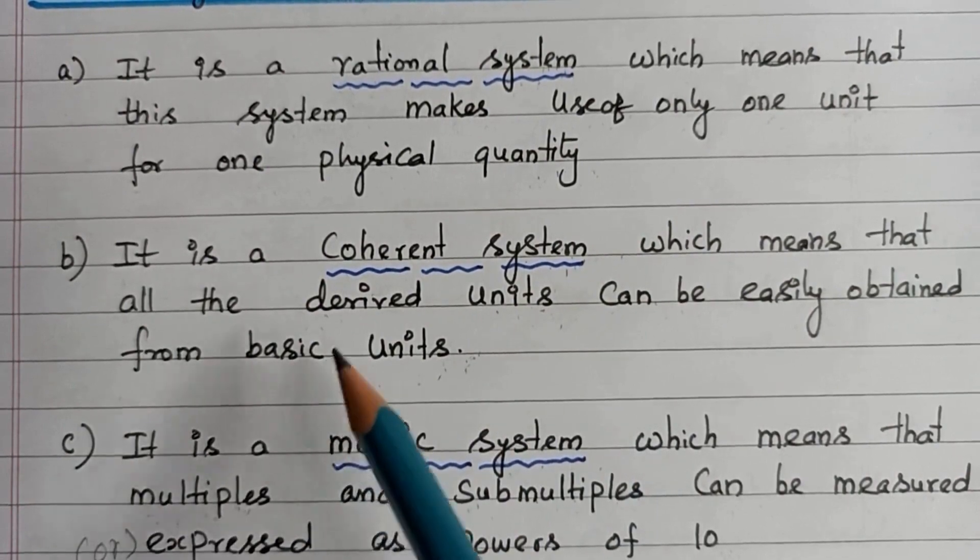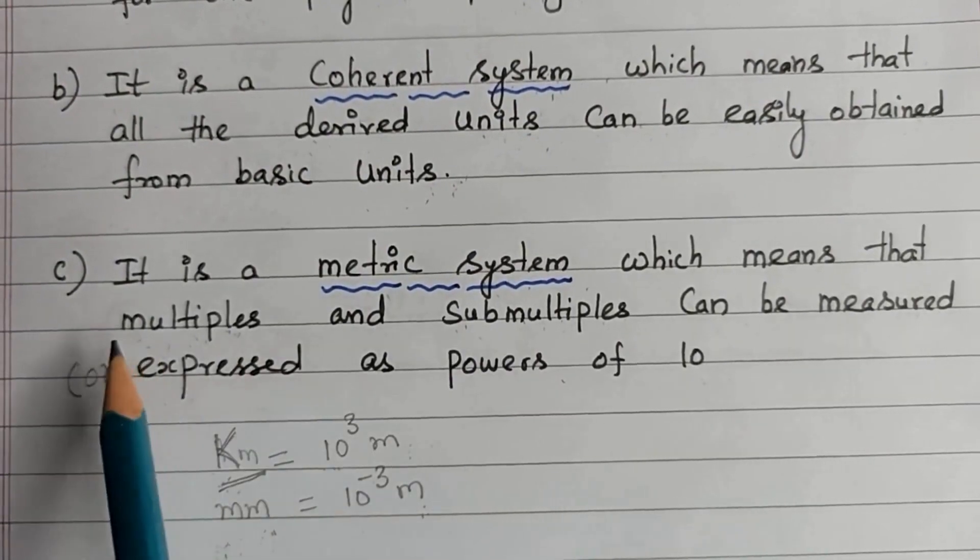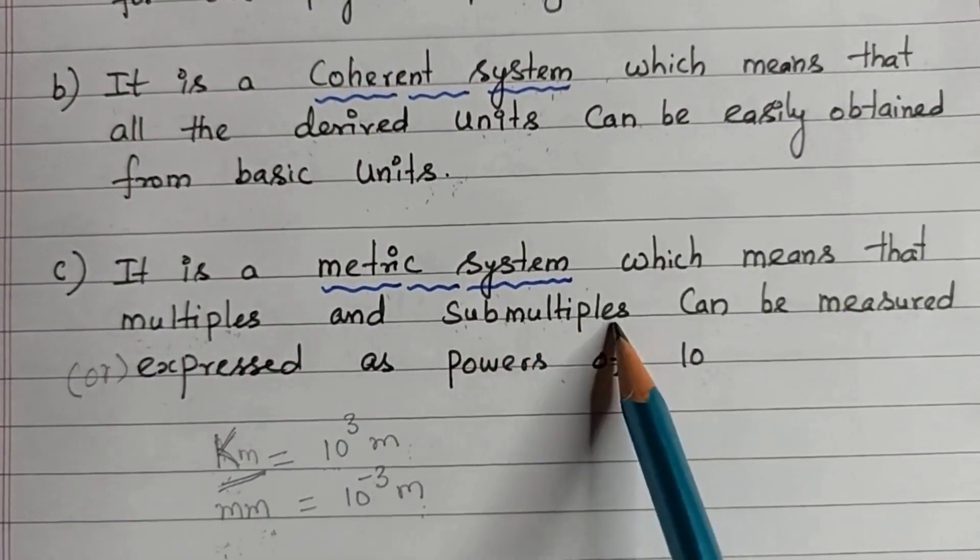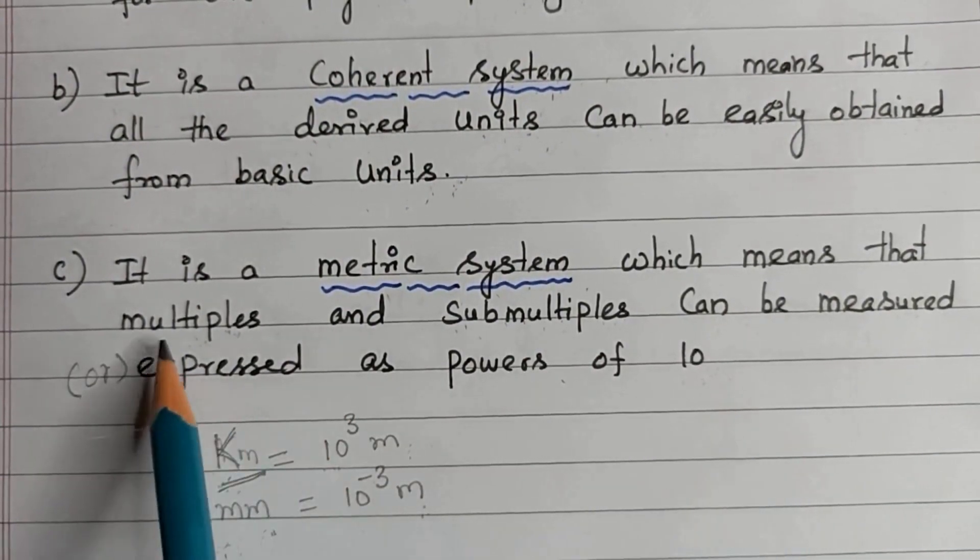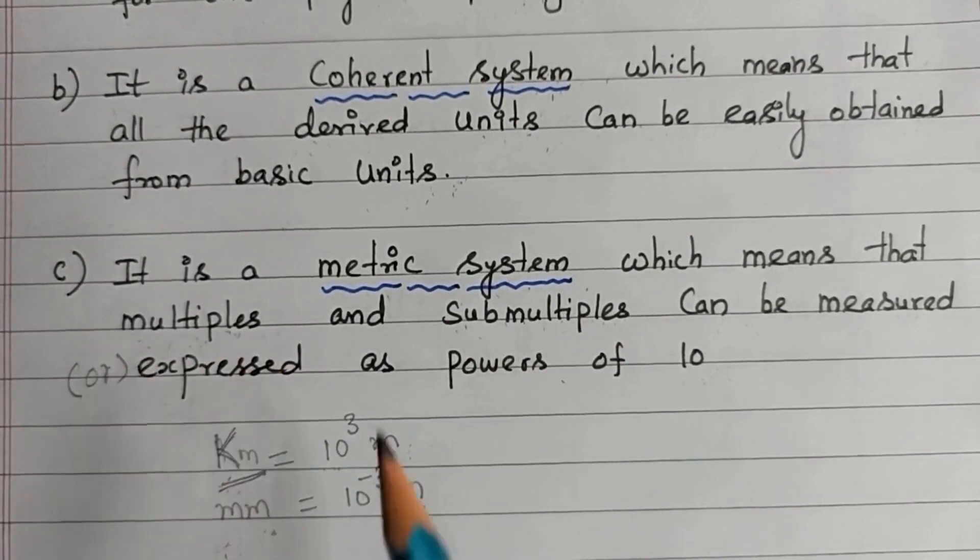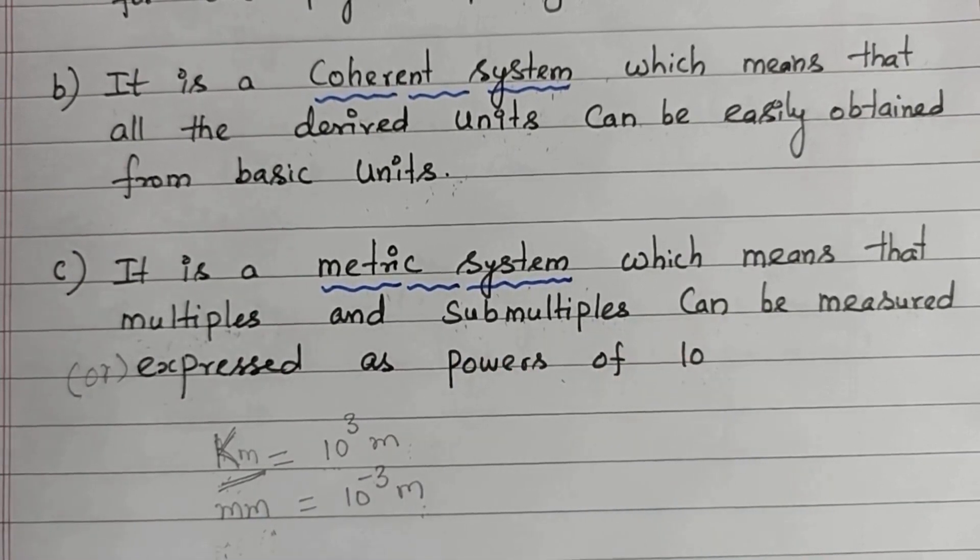The third advantage is it is a metric system, which means that multiples and submultiples can be measured or expressed as powers of 10. The meaning of multiples and submultiples is multiples means the higher units and submultiples means lower units.